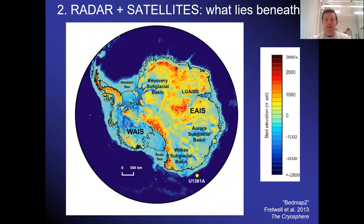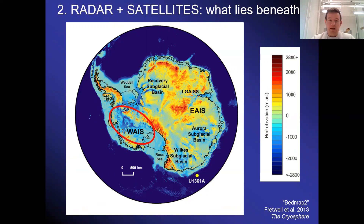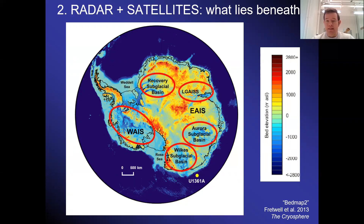If we look at Antarctica's subglacial topography today — our knowledge of which is much better than 10 to 20 years ago — we can see the elevation of the bed, with all blue areas below sea level. The West Antarctic ice sheet clearly sits mostly in subglacial basins below sea level. Equally, the East Antarctic ice sheet also contains sectors such as the Wilkes Subglacial Basin, the Aurora Basin, and the Recovery Basin, which have deep marine basins. We need to consider the terrestrial and marine-based portions of the East Antarctic ice sheet as slightly different beasts.